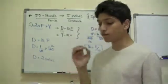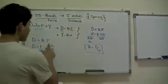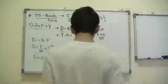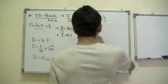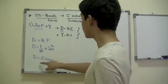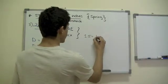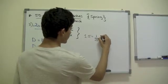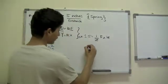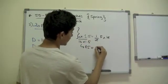The second question asks: what force is required to stretch the spring 1.5 inches? Instead of giving us force, they've given us the distance and ask us to find the force. We already found the constant. So: 1.5 = (1/10) times f. Multiply both sides by 10, and f = 15. So 15 pounds of force is required to stretch the spring 1.5 inches.